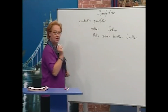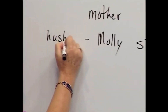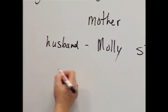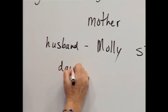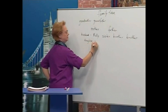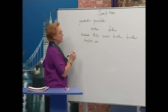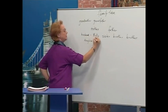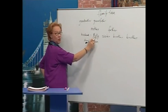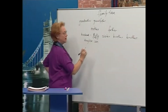Now, we also have husband, daughter, and son. Okay? So, husband, wife. Husband, wife, daughter, son.